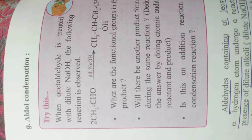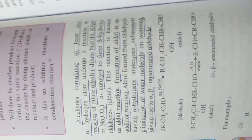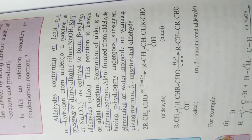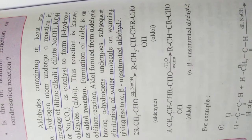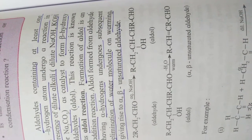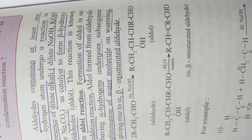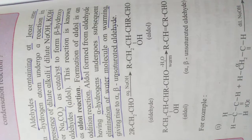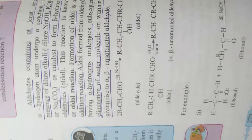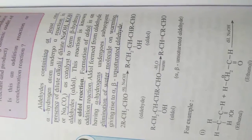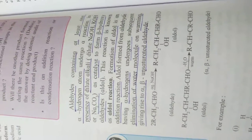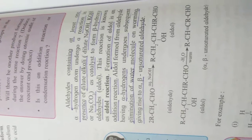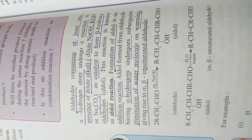Aldol condensation: An aldehyde containing at least one alpha hydrogen atom undergoes reaction in presence of dilute alkali as catalyst to form beta hydroxy aldehyde. This reaction is called the aldol reaction.